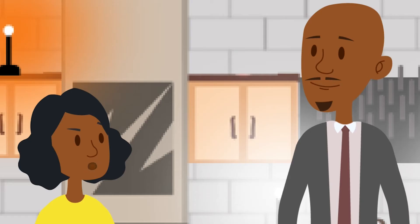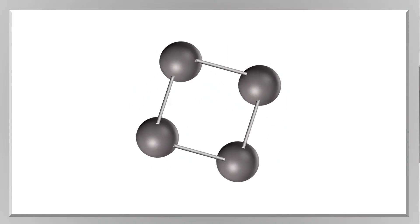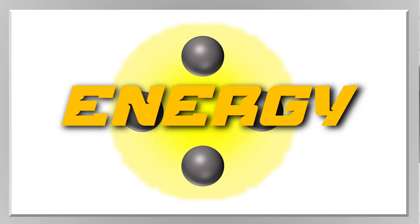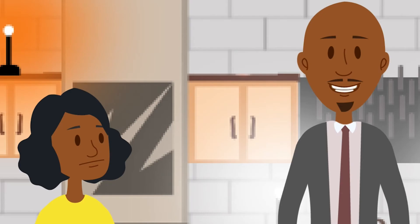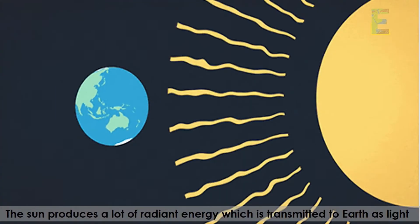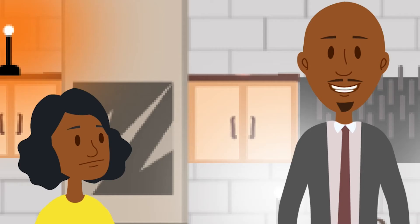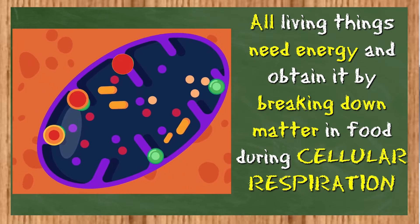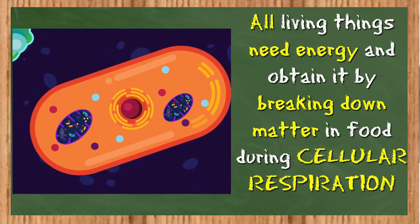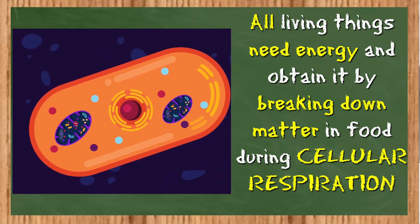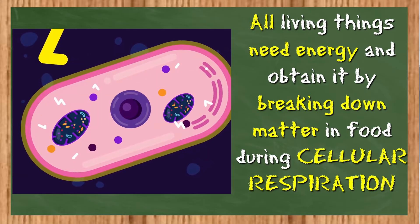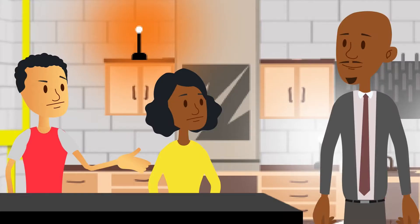So all of the food we eat goes towards making the matter in our bodies? No — actually most of it is broken down for the most important reason: we need the energy that the matter contains. Energy makes the world go round literally, and the flow of energy through our ecosystems is so important to our survival. All living things need this energy, and we get it from breaking down the matter in our food, making ATP during a process called cellular respiration.